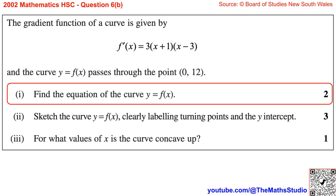Question 6, Part B. The gradient function of a curve is given by f'(x) equals 3 times (x plus 1) times (x minus 3), and the curve y equals f(x) passes through the point (0, 12). Part 1: Find the equation of the curve y equals f(x).